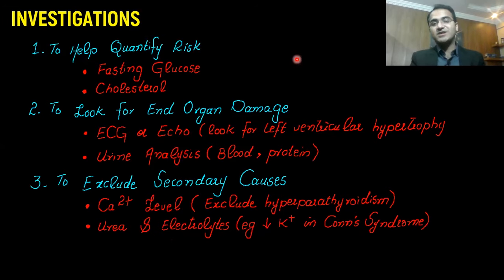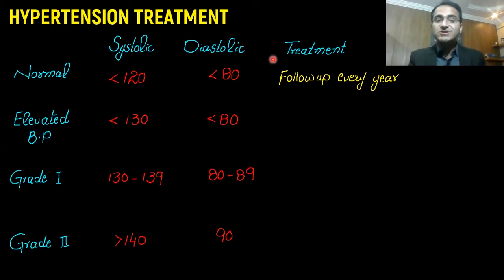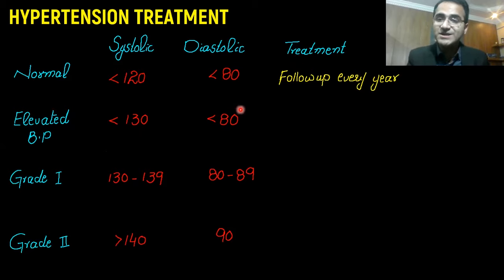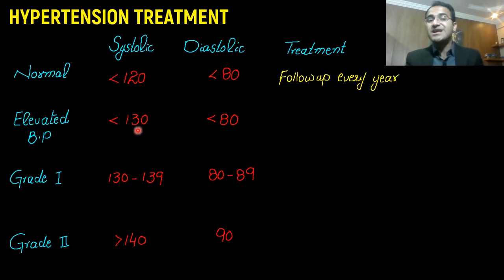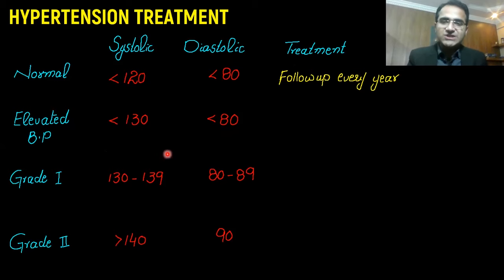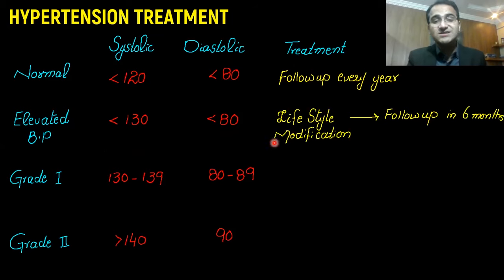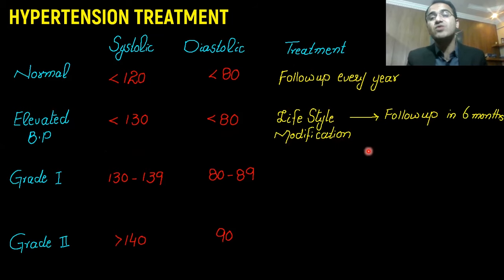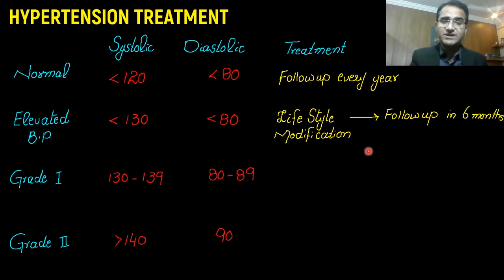Coming to treatment: if the patient has normal blood pressure, ask them to follow up after one year. If the patient has elevated blood pressure (120 to 130), this patient does not need medication — they need lifestyle modification, and you ask them to come for follow-up within six months.